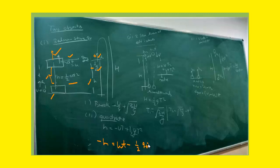The sign convention is your choice — it doesn't affect the final answer. If we take upward as negative and downward as positive, then H (downward) is positive, U (upward) is negative, and g (downward) is positive. Plug these directly into the quadratic equation s = ut + ½at² and the answer comes out immediately.